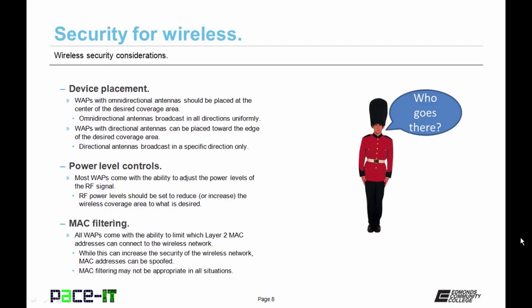Then there's device placement. Wireless access points with omni-directional antennas should be placed in the center of the desired coverage area — omni-directional antennas broadcast in all directions uniformly. So if you place one on the edge of where you want network coverage, you're going to be placing your wireless signal where it shouldn't belong. Wireless access points with directional antennas can be placed toward the edge of the desired coverage area, as directional antennas broadcast in a specific direction only. Then there are power level controls.